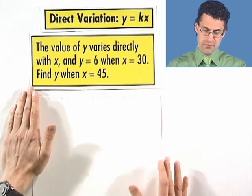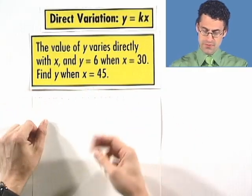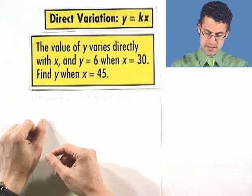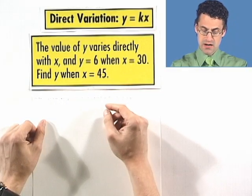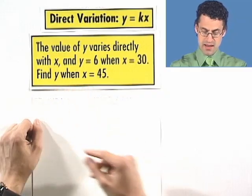So here's the question. The value of y, we're told, varies directly with x, and y equals 6 when x equals 30. Our question is to find y when x equals 45.